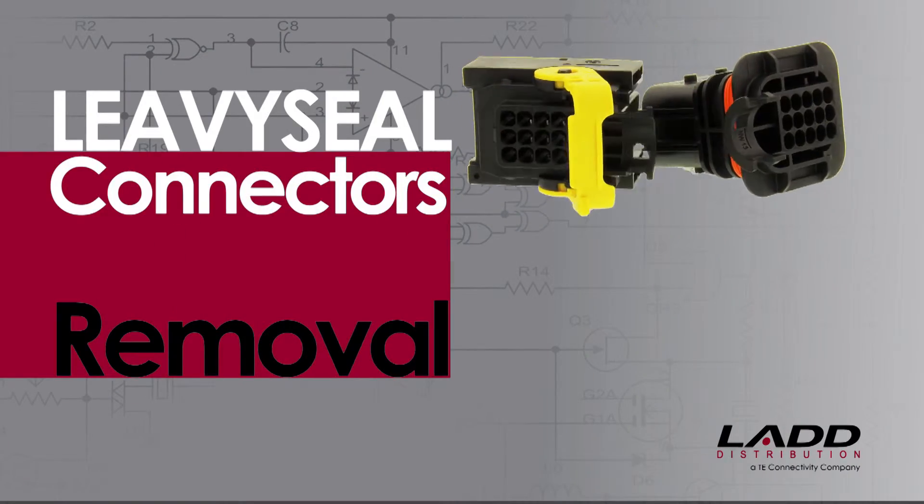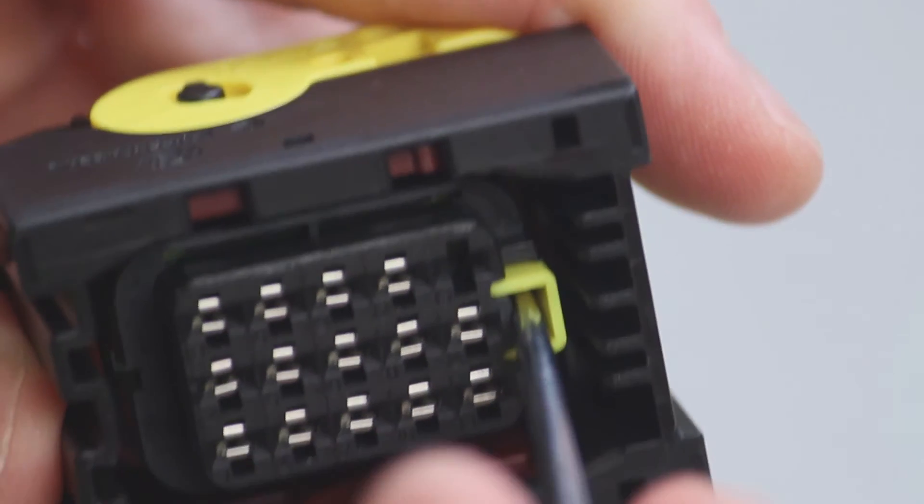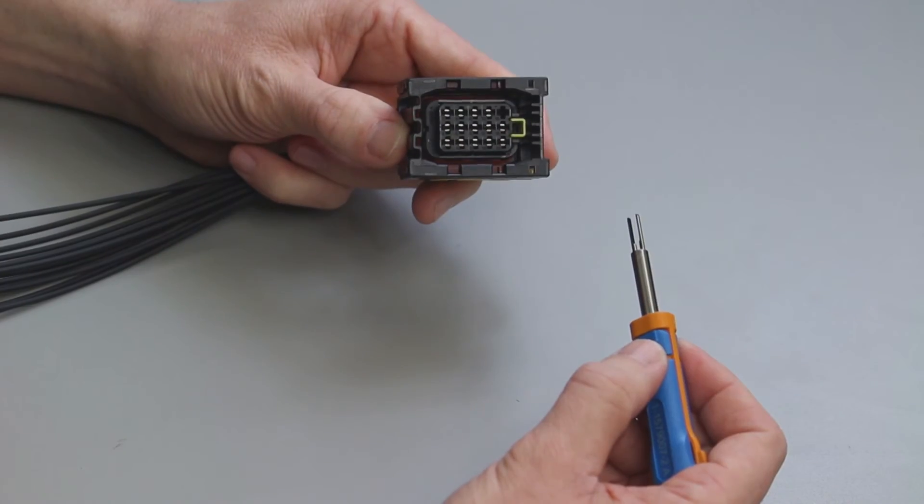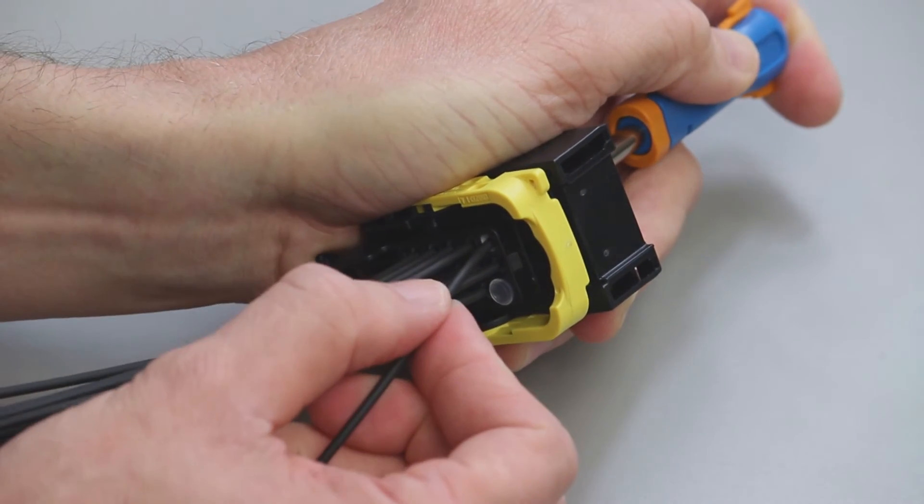Levee Seal Contact Removal. Connectors must be unmated to remove the contacts. Using a DT-RT1 or a screwdriver, slide the integrated secondary lock into the unlocked position. Using the correct removal tool, insert the tool into the contact release points while holding the tool in place.